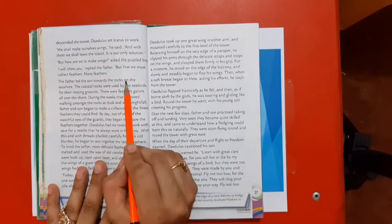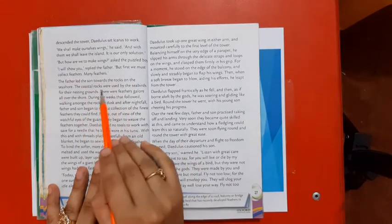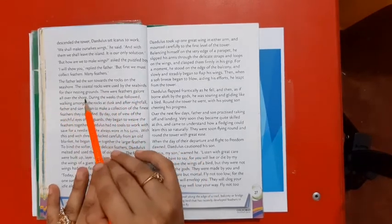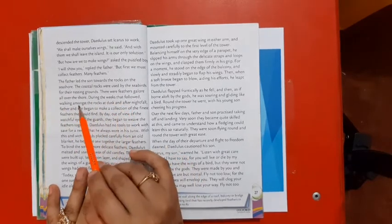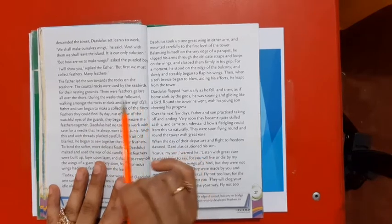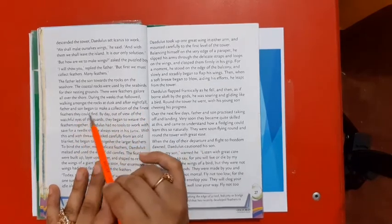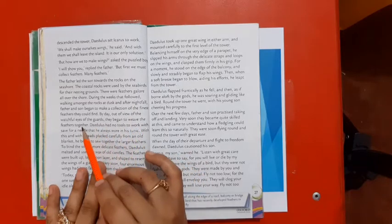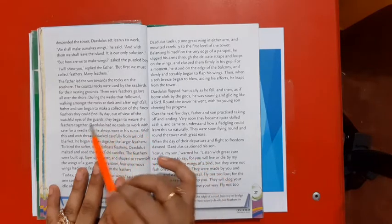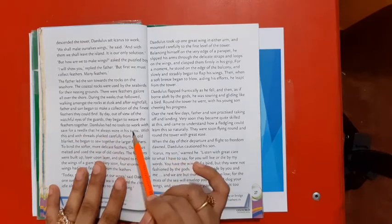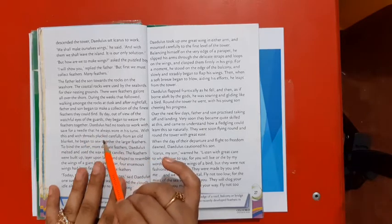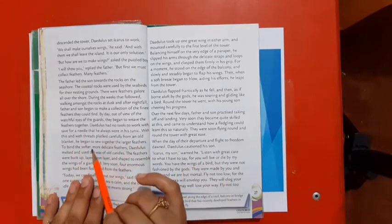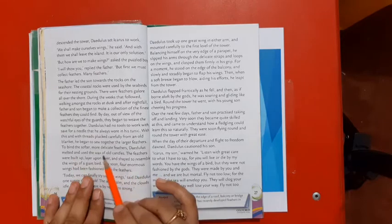The father led the son towards the rocks on the seashore. The coastal rocks were used by the seabirds for their nesting grounds. There were feathers galore all over the shore. During the weeks that followed, walking amongst the rocks at dusk and after nightfall, father and son began to make a collection of the finest feathers they could find. By day, out of the view of the watchful eyes of the guards, they began to weave the feathers together. Daedalus had no tools to work with save for a needle that he had always worn in his tunic. With this and with threads plucked carefully from an old blanket, he began to sew together the larger feathers to bind the softer, more delicate feathers. Daedalus melted and used the wax of old candles.